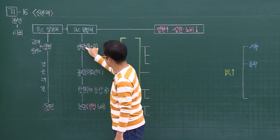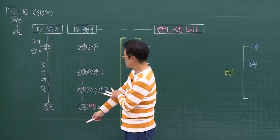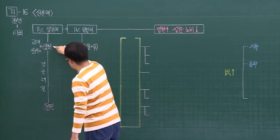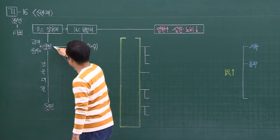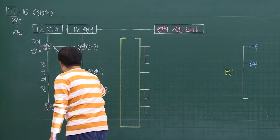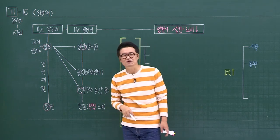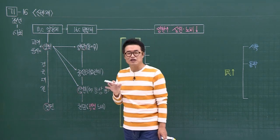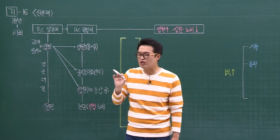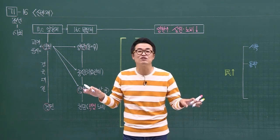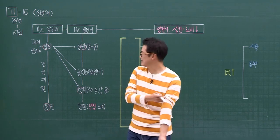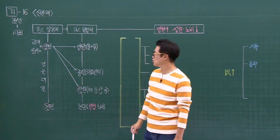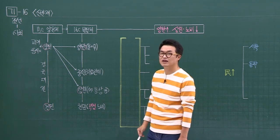양인이 양반과 상민으로 분화된 거예요. 16세기 들어오면서 이렇게 분화되는 모습입니다. 아무래도 16세기는 성리학 원칙주의자들이 주도하는 시대였기 때문에 양반과 상민이 같은 무리에 있을 수 없는 거죠. 성리학은 각 신분에 맞게, 분수에 맞게 사는 사회가 가장 안정적이고 좋은 사회다라고 이야기하는 거예요. 그래서 이런 모습으로 조선시대는 일반적으로 돌아가고 있더라는 걸 기억해 놓으시면 되겠습니다.